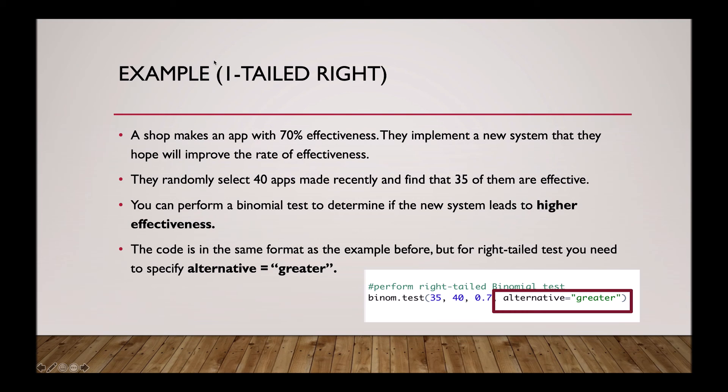Again, the code is in the same format as both of the previous examples. But this time, for a right-tailed test, you need to specify alternative equals greater.